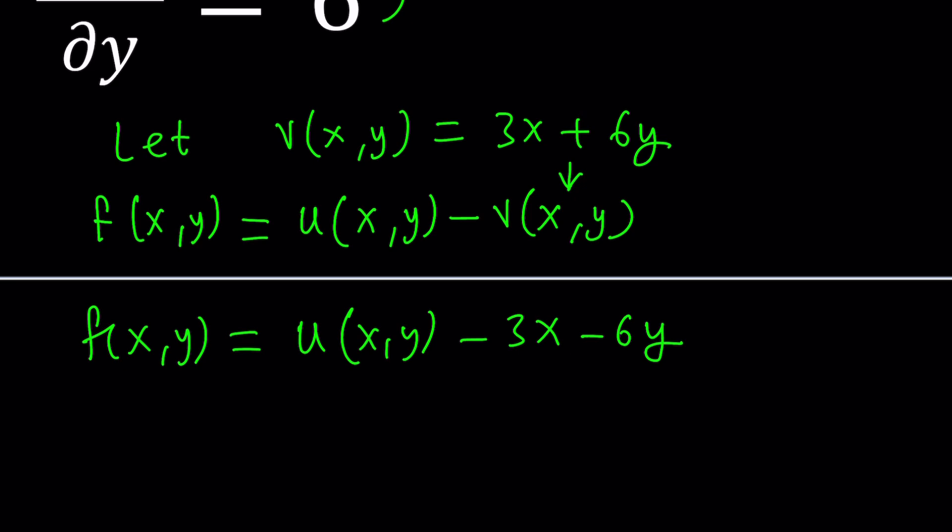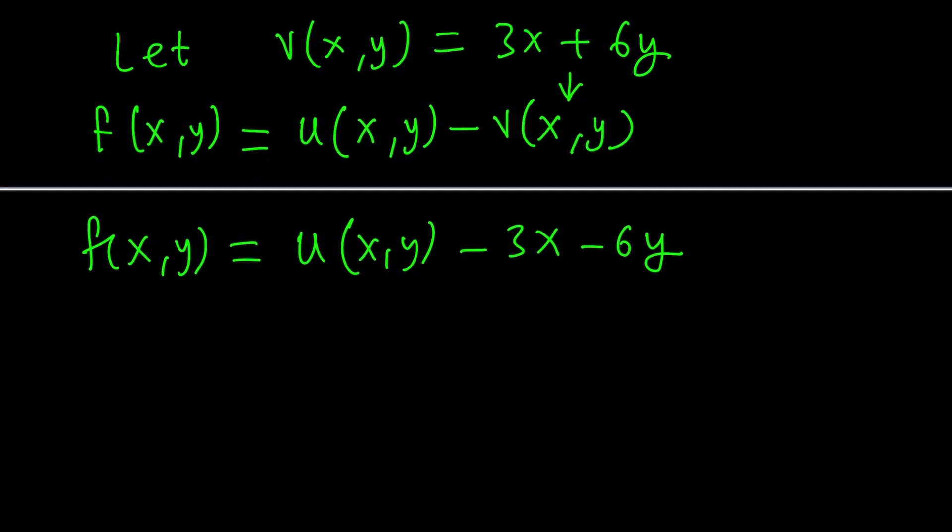So now we're going to go ahead and take the partial derivatives. If we do ∂f/∂x, these are partial derivatives. When we take the derivative with respect to x, first we're going to differentiate u. That's going to be ∂u/∂x. And then we're going to differentiate 3x, which is minus 3. But the derivative of y will be 0 because y does not contain x and it's considered a constant with respect to x.